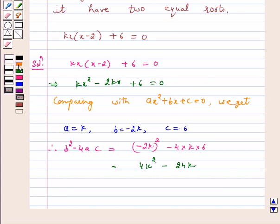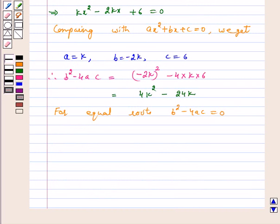Therefore, 4k square minus 24k is equal to 0. This implies k minus 6 is equal to 0, dividing this equation by 4k.